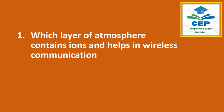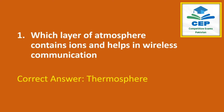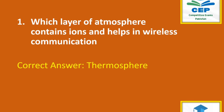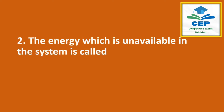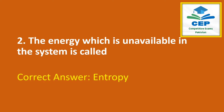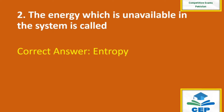Which layer of atmosphere contains ions and helps in wireless communication? The answer is thermosphere. The energy which is unavailable in the system is called entropy. The correct answer is entropy.